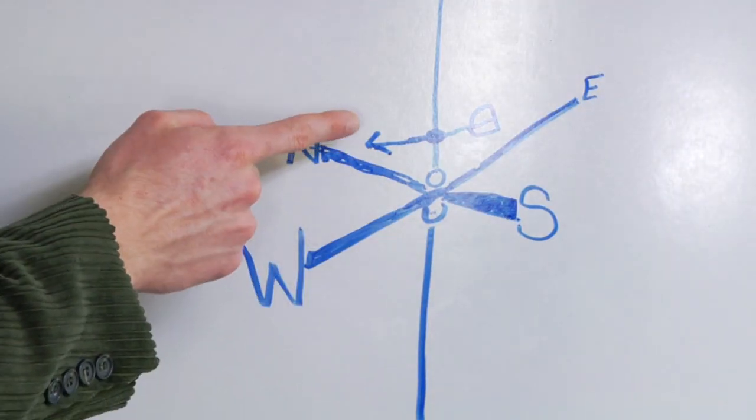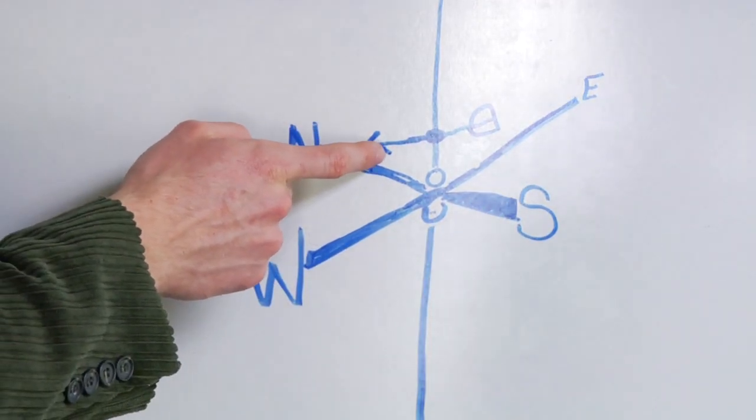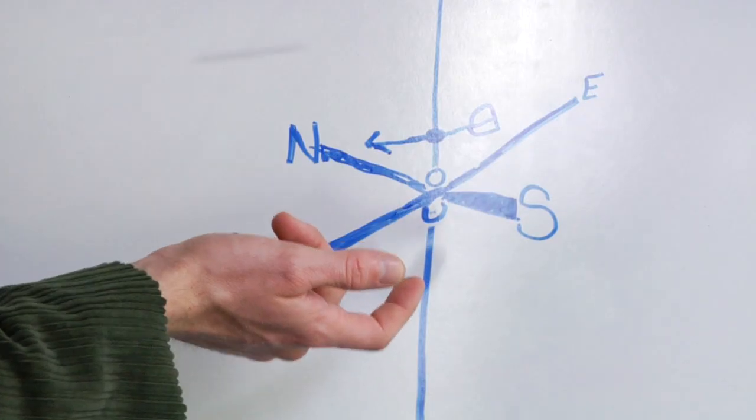And then all you have to do is you read the direction that your small arrow is pointing at and that's the wind direction.